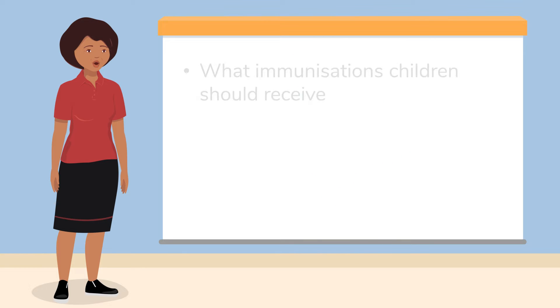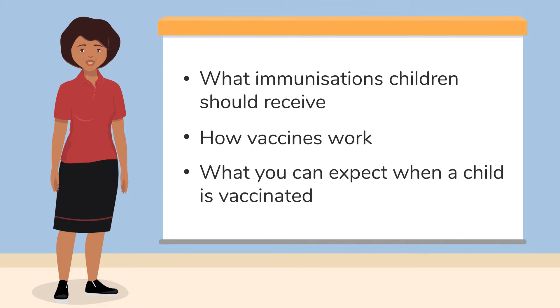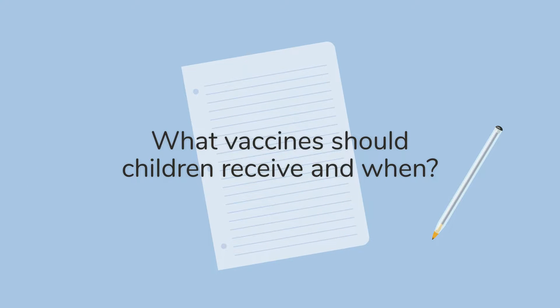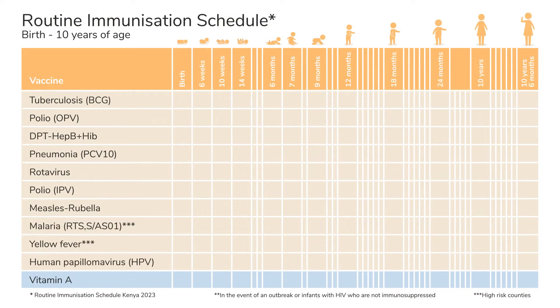Let's take a closer look at what immunizations children should receive, how vaccines work, and what you can expect when a child is vaccinated. For the best protection against disease, children should receive vaccines at specific times. This is called the immunization schedule.